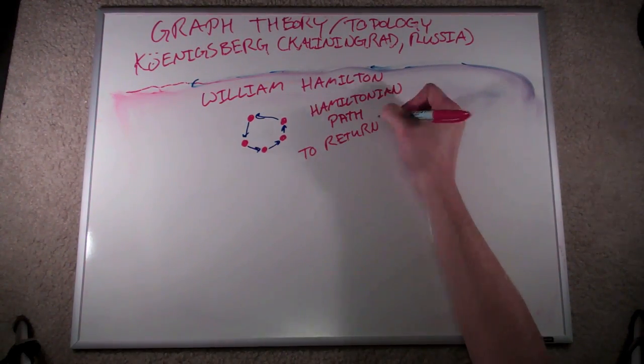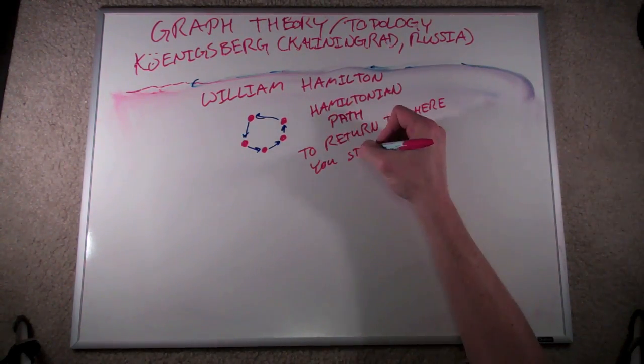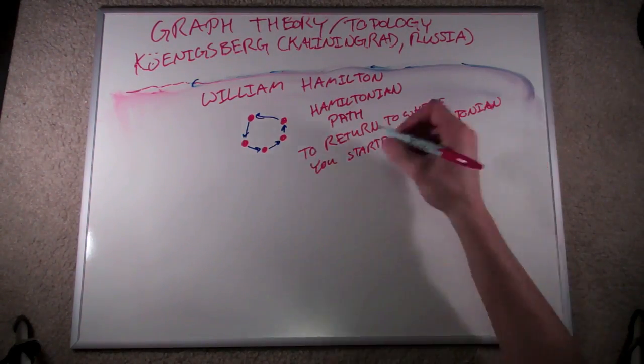We would refer to this as a Hamiltonian path. We can go a step further, just like Euler did, and return to the same point where we started, in which case we're talking about a Hamiltonian cycle.